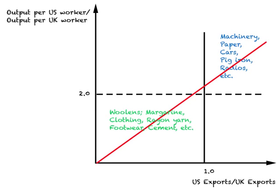MacDougall conducted this study for 20 different industries, where items were being produced both in the U.S. and U.K. In the diagram, U.S. exports divided by U.K. exports is on the horizontal axis, and productivity of the U.S. worker relative to the British worker is on the vertical axis. Because wages were twice as high in the U.S., if productivity of the U.S. worker was greater than 2 relative to the British worker, the U.S. would have a comparative advantage. If this number fell below 2, the U.K. had a comparative advantage over the U.S.